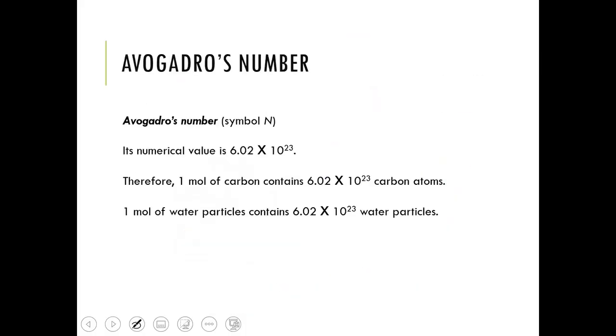This number is called Avogadro's number. Now, like I said, it's a counting unit. If I had a dozen cars or a dozen pencils, those are two very different things, but I know that there's still 12 of that. So I can say that I have a mole of carbon, and that means that I have 6.02 times 10 to the 23rd carbon atoms.